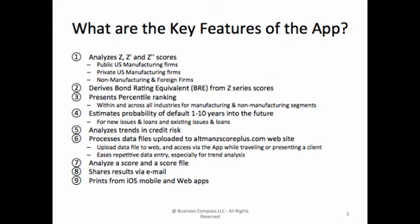Additional key features include: analyzes trends in credit risk, processes data files uploaded to the Altman G-Score Plus website, allowing you to upload a data file to the web and access it via the app while traveling or presenting to a client. This mechanism avoids repetitive data entry, especially for trend analysis. It can also analyze a score and a score file, share results through email, and print from iPhone, iPad, and iTouch devices onto AirPrint-capable printers, as well as print from the web.